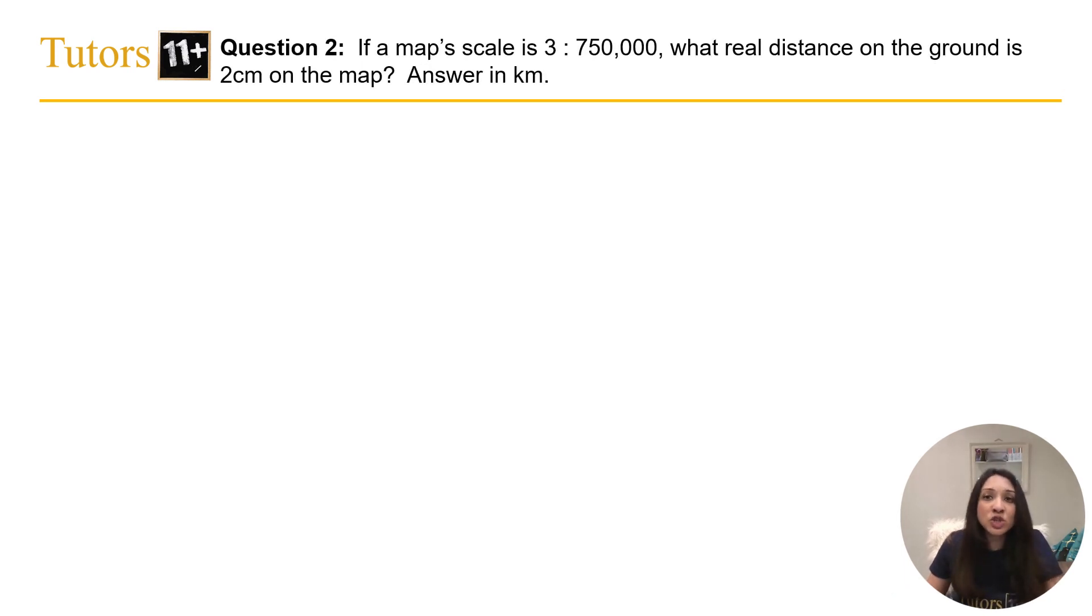Let's go on to question number 2. If a map scale is 3 to 750,000, what real distance on the ground is 2cm on the map? Answer in kilometers.